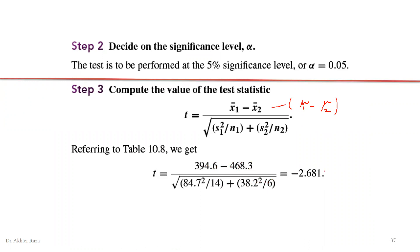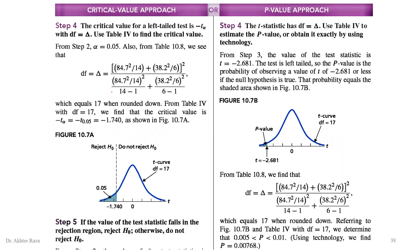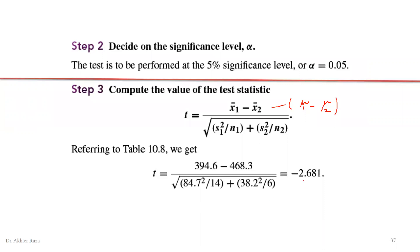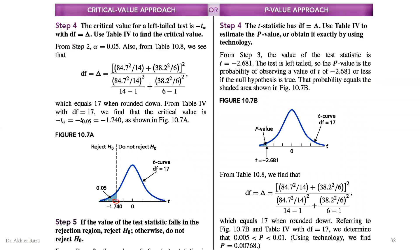The t-score is computed as minus 2.681. This value is looked up in the t-table to get the p-value, or the critical value is found at the 5% level of significance. The degrees of freedom is computed as 17 using the large formula. The critical value is minus 1.7, and since minus 2.6 is clearly below minus 1.7, we reject the null hypothesis. Data provides sufficient evidence in favor of H1, and the researcher's claim is valid.